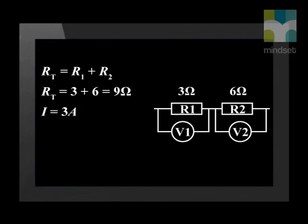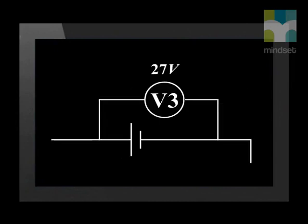We know that the current is the same throughout the circuit, therefore I equals three amperes. Now applying Ohm's law, V equals I times R. Substituting in the values for I total and R total, we calculate the total potential difference to be 27 volts. V3 gives the total potential difference of the circuit.